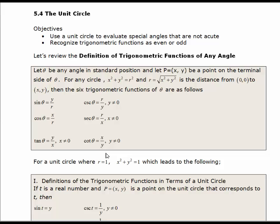The other thing we do when using a unit circle is instead of using theta as our angle, we're going to use t, and we're going to talk about t as being a real number. We'll get into that at the beginning of the next unit, but for now just think of t as an angle — it's a new variable.